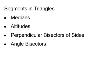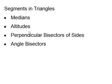In the first two segments of chapter five we're talking about special segments that can be drawn in triangles. We've already discussed in section one the perpendicular bisectors of the sides and the angle bisectors. In this video segment we're going to discuss the first bullet, which is the median of the triangle.